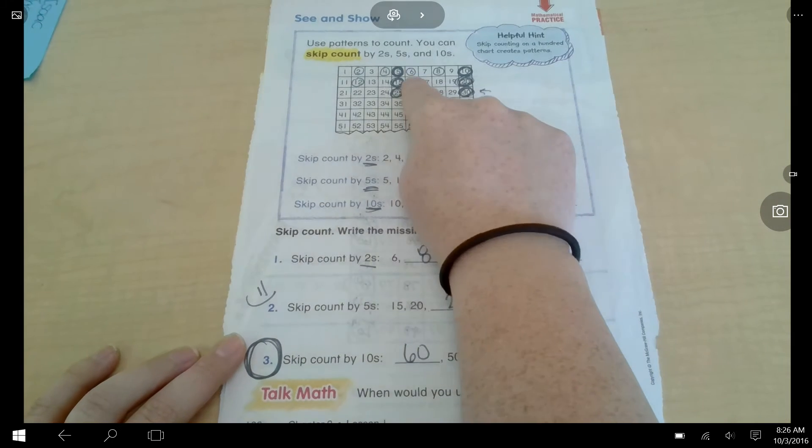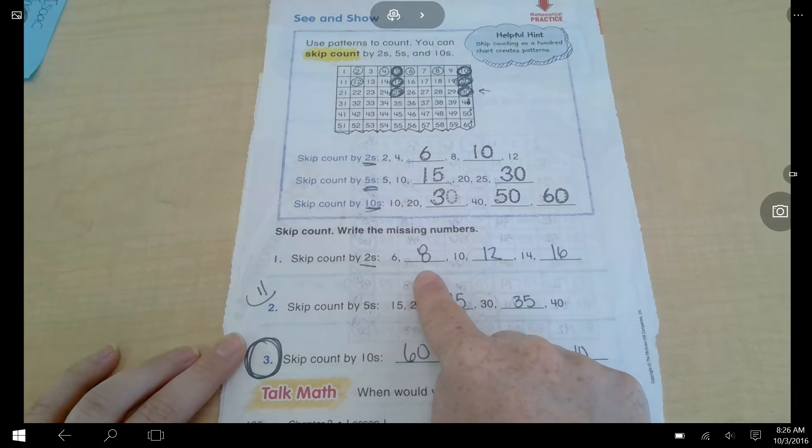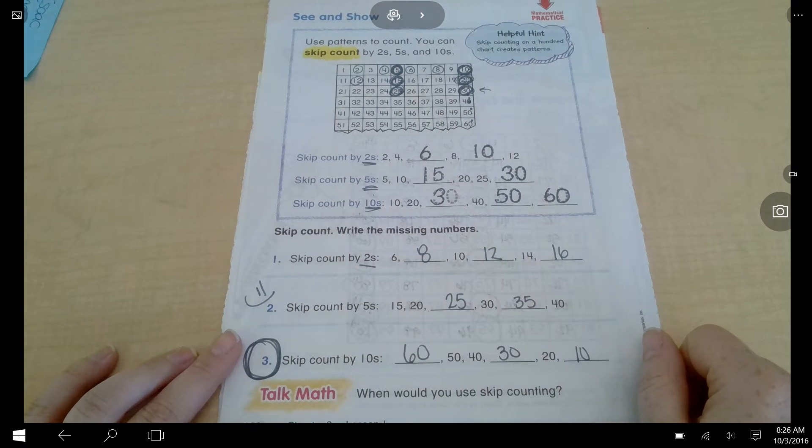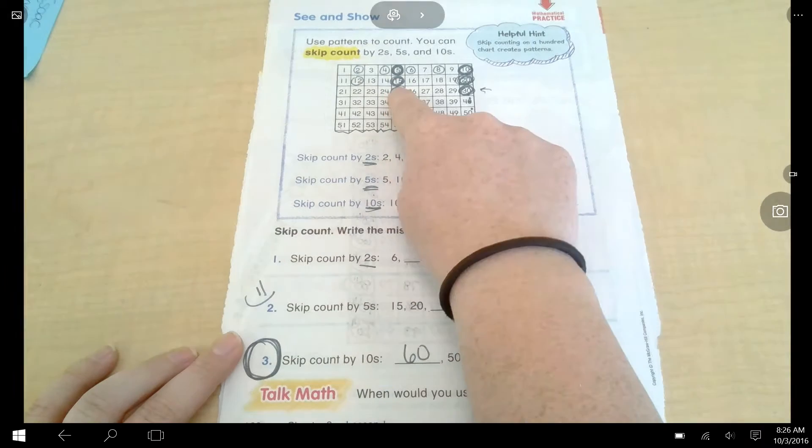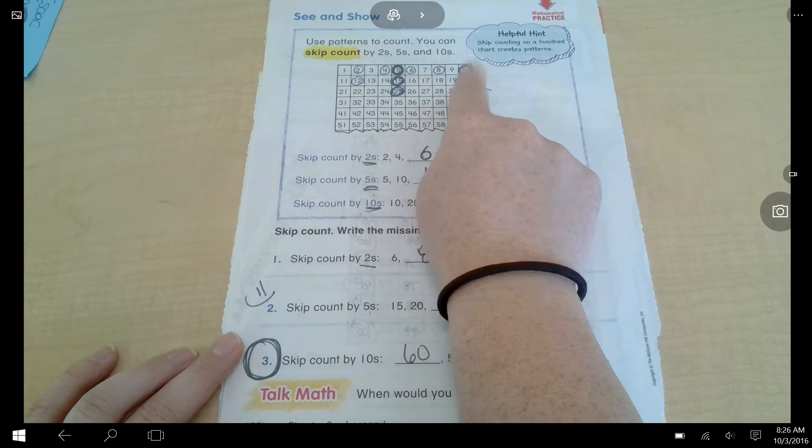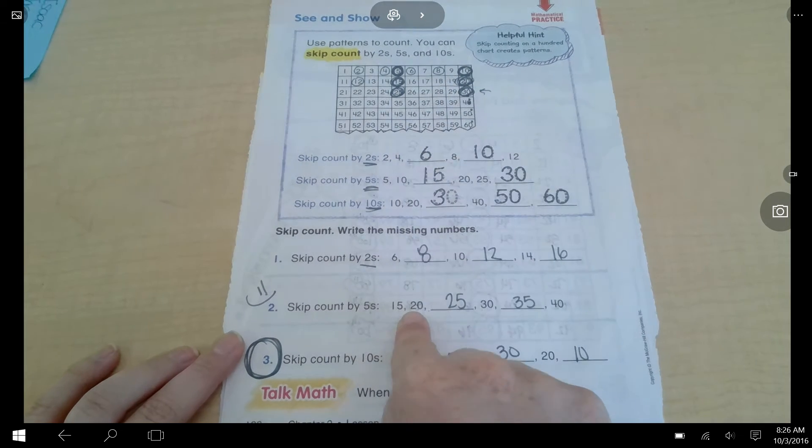So, this time it's starting at 6. I'm going to skip count. 1, 2. And then it's 8, 2, 1. That's so tricky. Now it says skip count by fives. It starts at 15. Let's go to the 15. 1, 2, 3, 4, 5. The next number is 20.